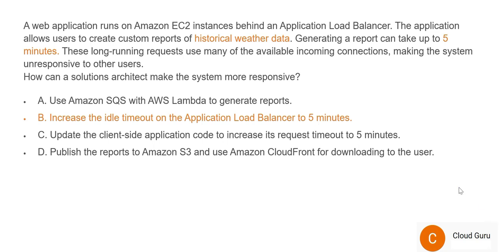The load balancer is smart — ALB will try to divert requests to various EC2 instances. But the problem is not with that diversion. The problem is that you need to collect requests in a queue and process them so that nothing gets lost and users don't get unresponsive results. So B is definitely wrong. Option C says to increase the request timeout in the client-side application code to 5 minutes. This will also not help, because the reports are already taking 5 minutes — increasing the client timeout doesn't solve the underlying processing delay.